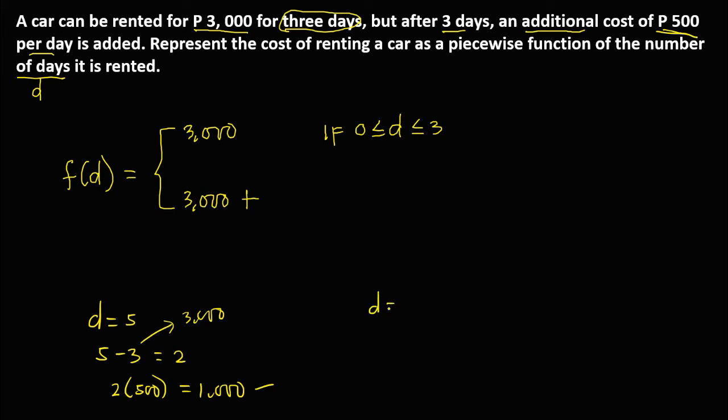If the number of days is equal to 10, we have 10 minus 3. This is 7, so 7 days exceed. We have an additional 7 times 500 because 500 per day, that's equal to 3,500. This is the additional cost.